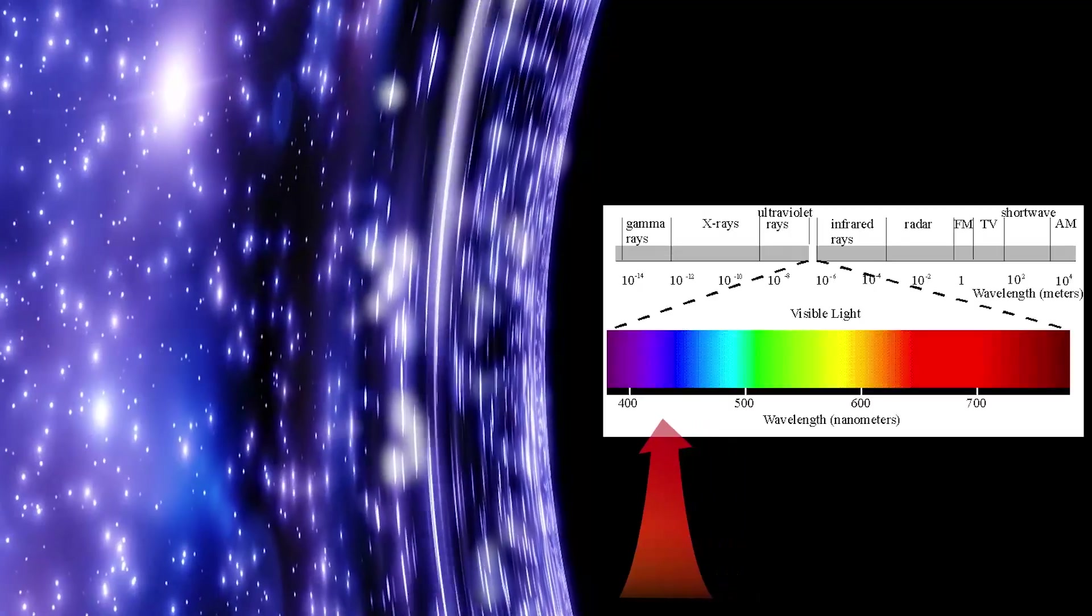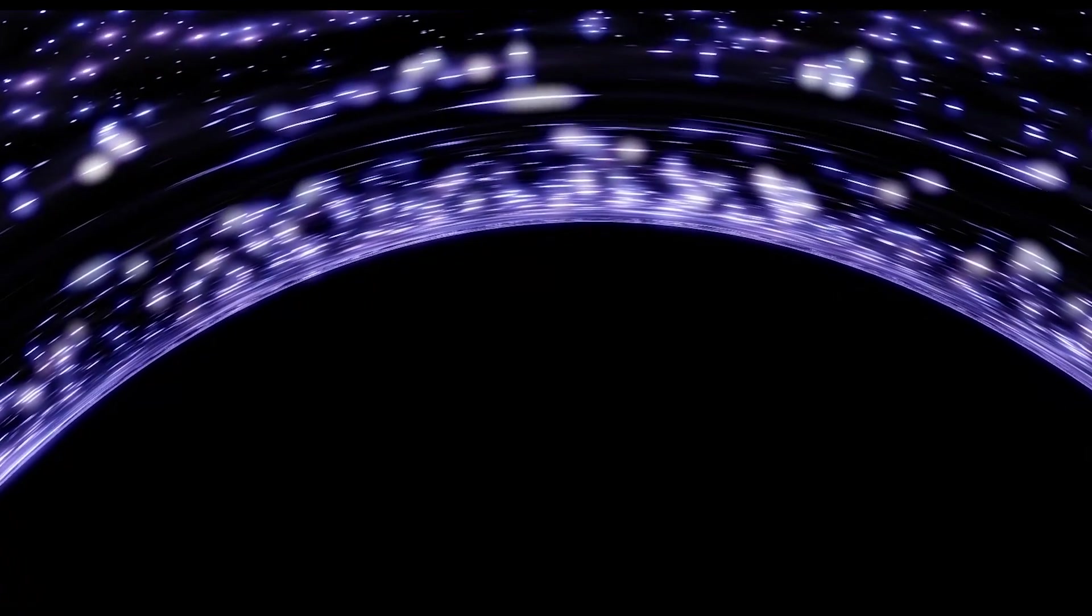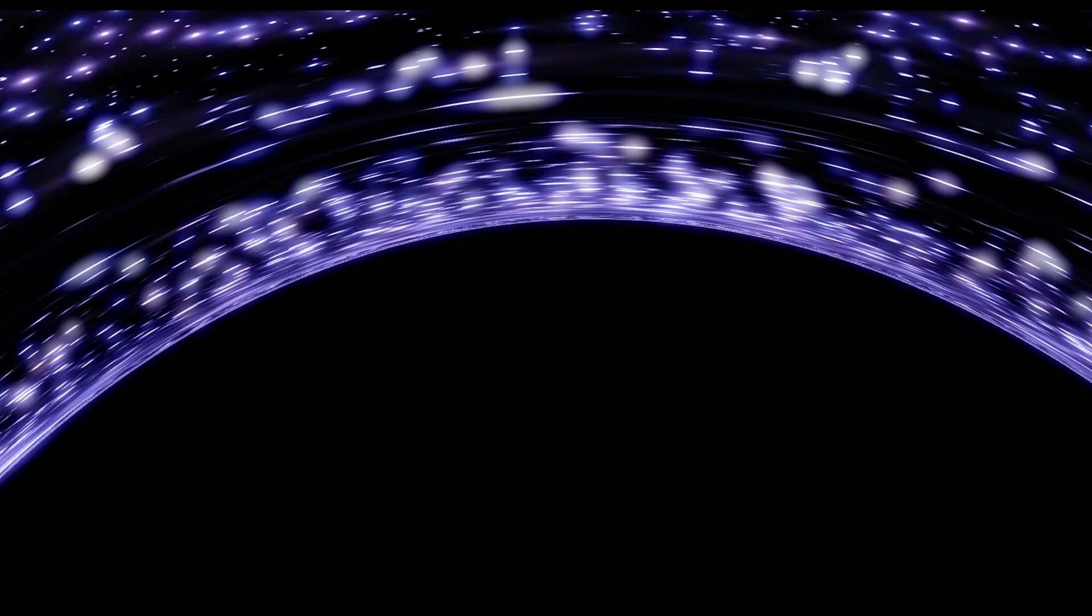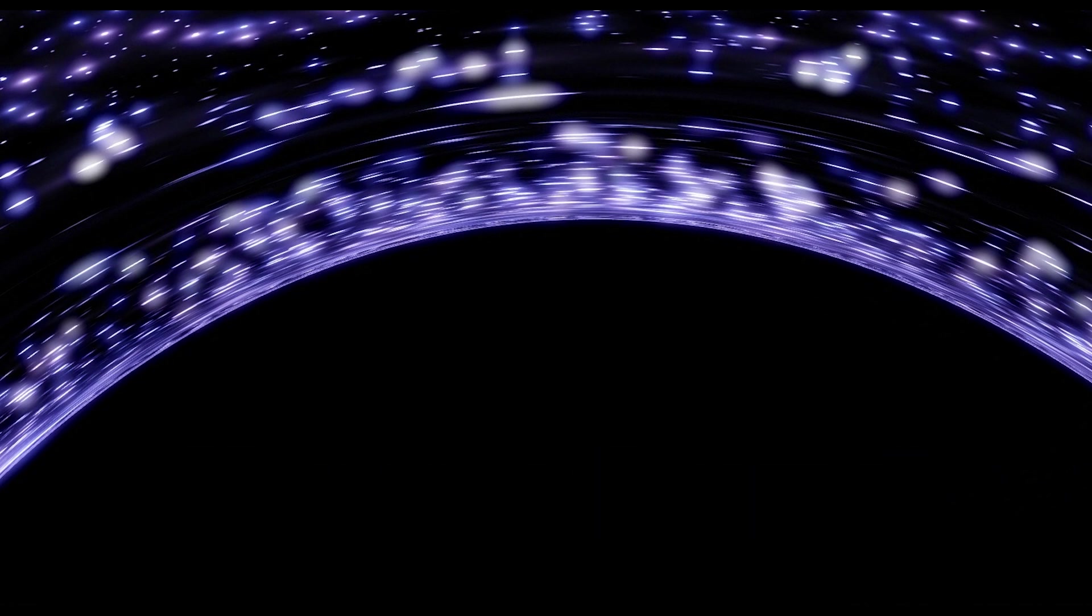That happens because light trying to escape the black hole has a shortened wavelength corresponding to the blue part of the spectrum. As we slowly approach the event horizon, we start to get unstable. We have to use the thrusters of the rockets to keep in orbit.